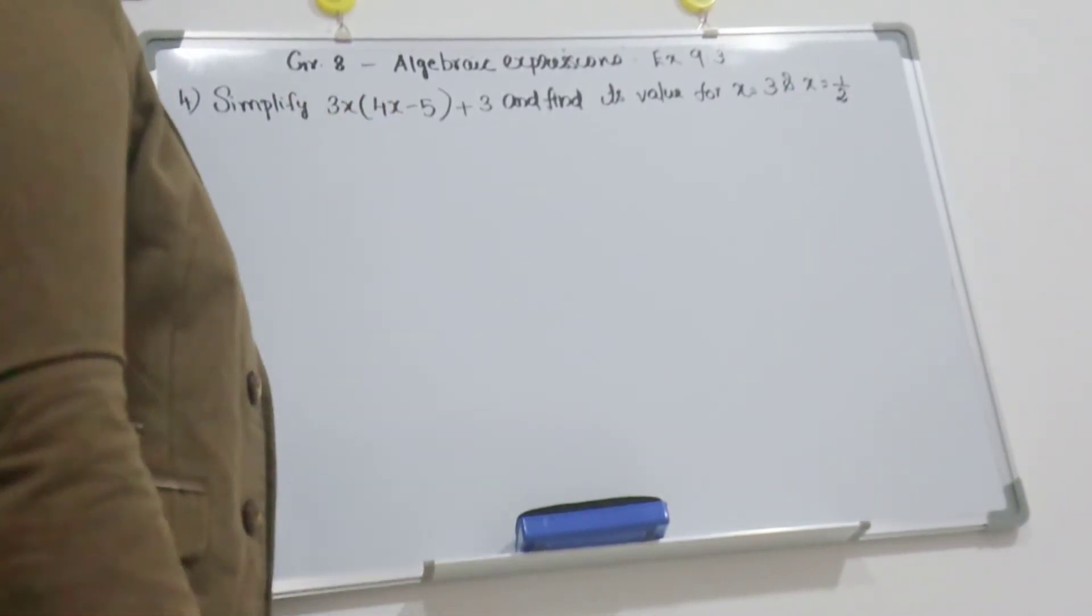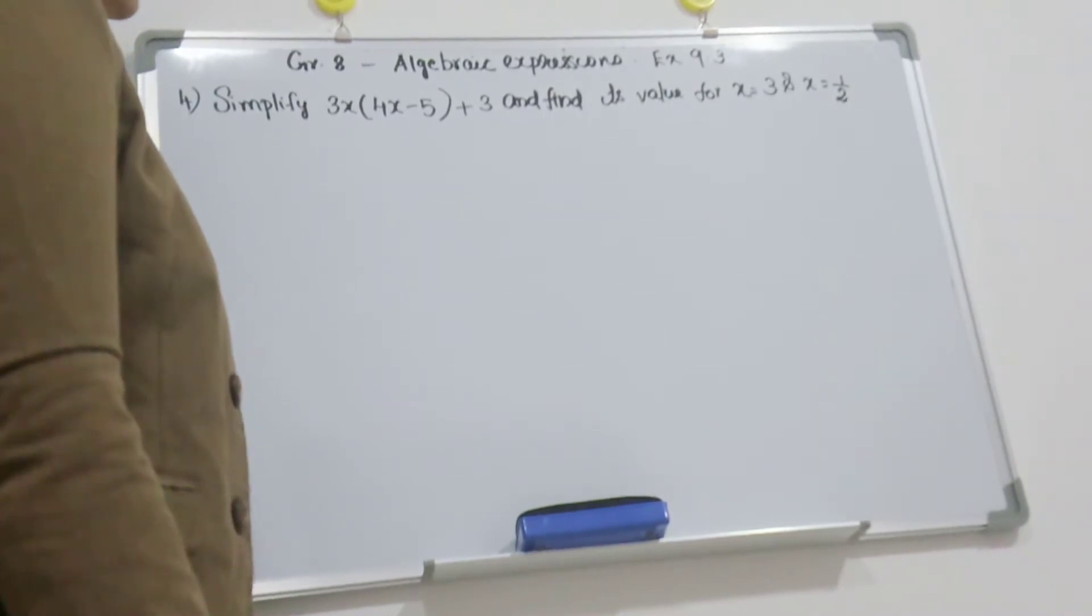Simplify 3x into 4x minus 5 plus 3 and find its value for x equal to 3 and x equal to 1 by 2.